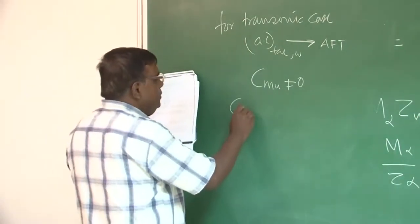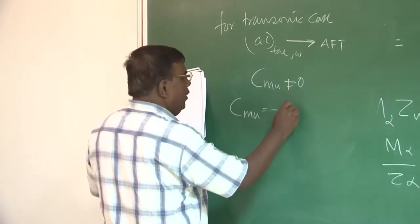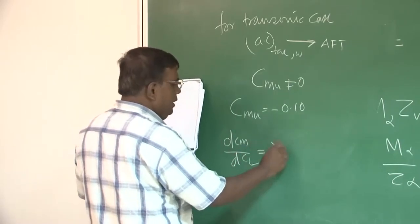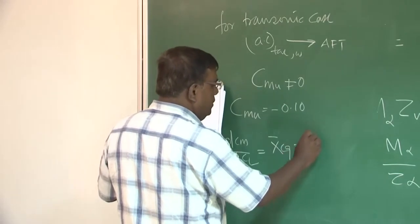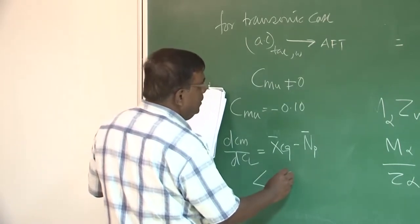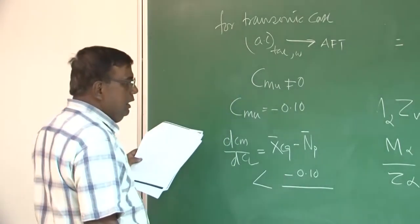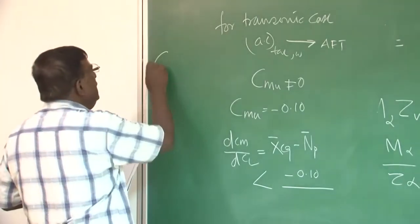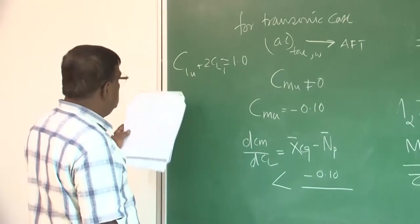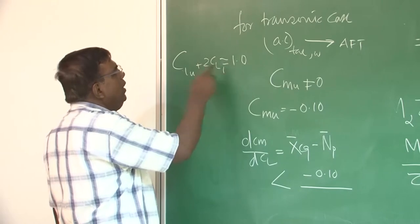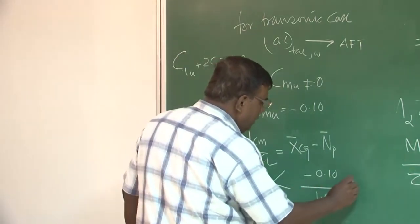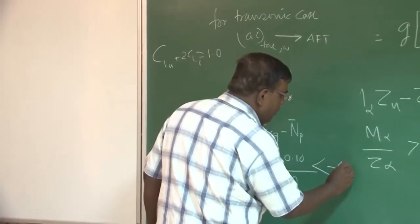Let us say C_m_u is minus 0.10, then your dC_m/dC_l, which is nothing but x_CG minus neutral point, this should be less than minus 0.1 divided by (C_l_u plus 2C_l_1). What is the value of C_l_u we take? Let us say C_l_u plus 2C_l_1 is typically 1.0. If you see that, if I am flying with C_l 0.5, the 2 into 0.5 becomes 1, C_l_u is very small. So it is not a bad approximation to take this value as 1.0. So I put it as 1.0. So this becomes, it should be less than minus 0.1.